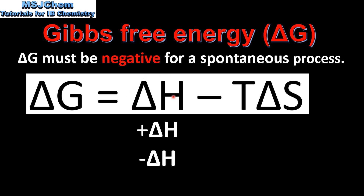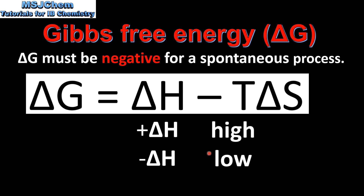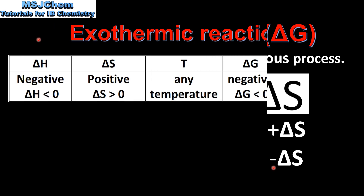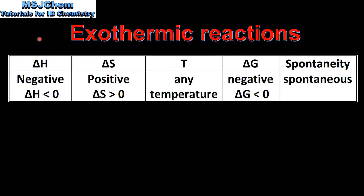The change in enthalpy can be either positive for an endothermic reaction or negative for an exothermic reaction. The temperature can be either high or low, and the change in entropy can be positive, which is an increase in entropy, or negative, which is a decrease in entropy. So let's start by looking at exothermic reactions.